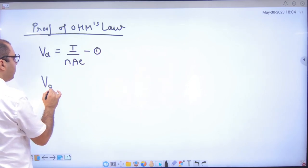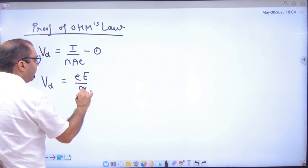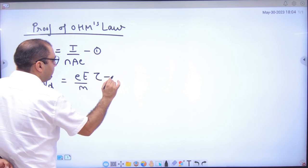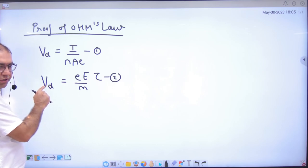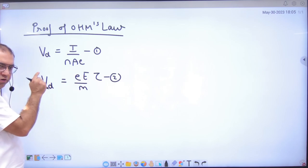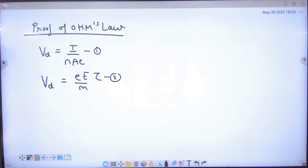The second formula we have done was drift velocity E by M into Tau. It was like that, right? You say negative sign? Negative sign was when I wrote vector representation. If E be vector, Vd be vector, then the velocity of drift, the drift velocity and the electric field are opposite. That's why sign is negative. But if magnitude write it, both are clear.